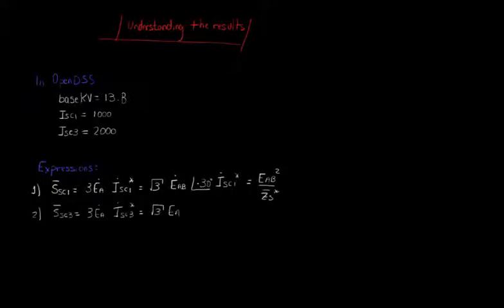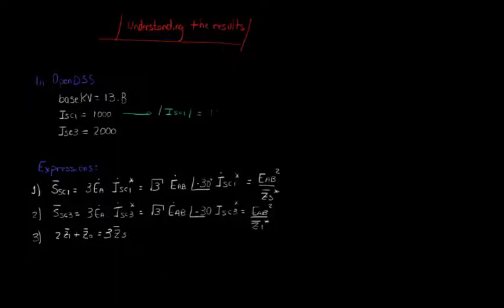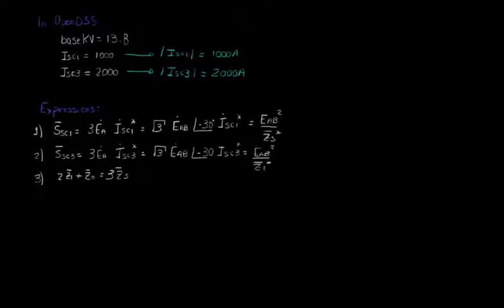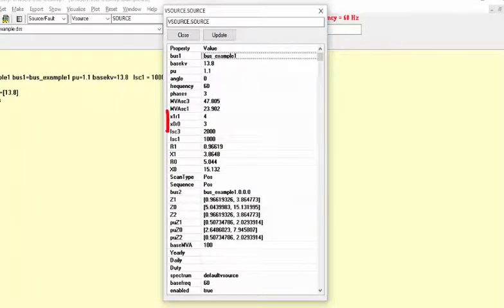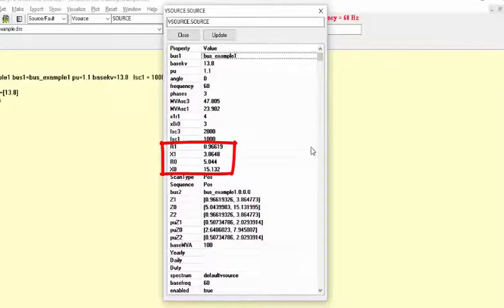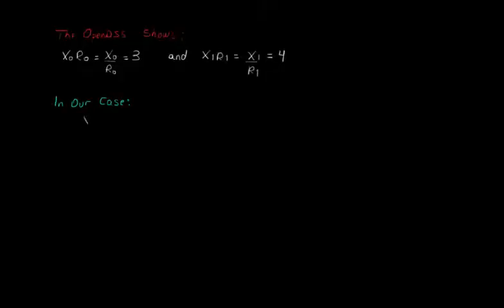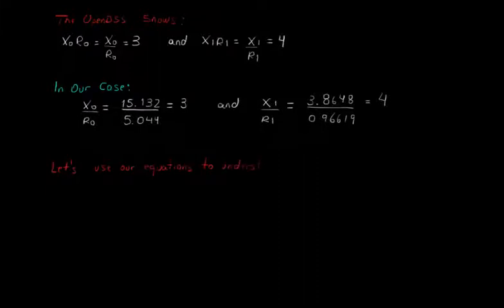The key point here is that when you define either ISC1, ISC3 or MVASC1, MVASC3, OpenDSS understands these parameters as a module. In our case, for example, it means that the module of ISC1 is equal to 1000 and the module of ISC3 is equal to 2000. If we pay attention to the table with the description of the vSource element, we can notice that there are two parameters called X1R1 and X0R0. They define the ratio between X1 and R1 and X0 and R0, and by default their values are 4 and 3, respectively. From the table, if we take X1 divided by R1 and X0 divided by R0, we will get exactly 4 and 3, which means that the OpenDSS default values of X1R1 and X0R0 are being used.